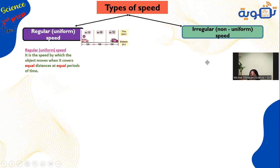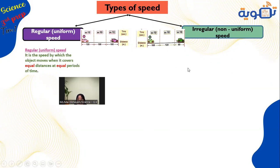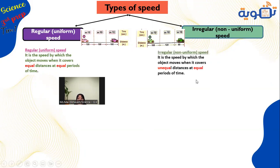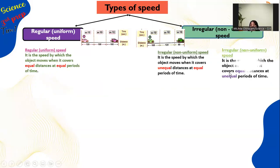Irregular speed is when the object covers unequal distances in equal periods of time. Car B covers 100, then 120, then 80 meters in equal time periods. Alternatively, irregular speed is when the object covers equal distances in unequal periods of time.